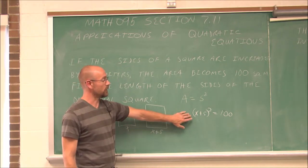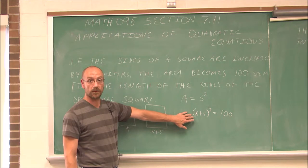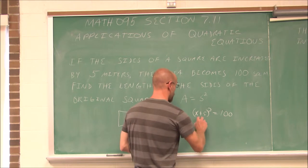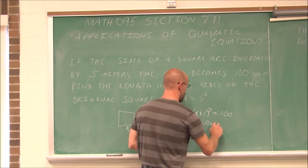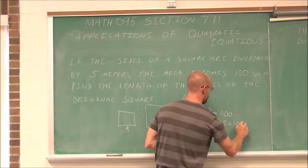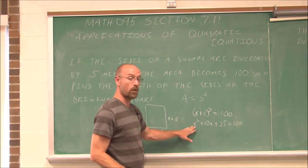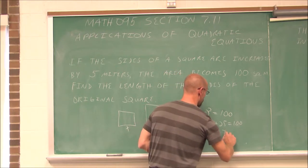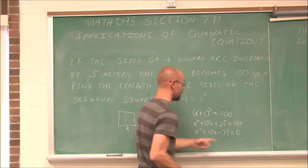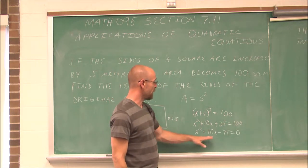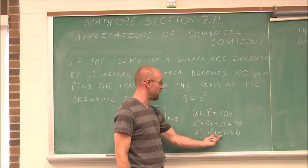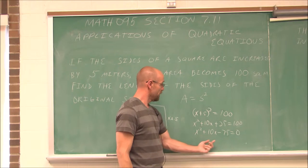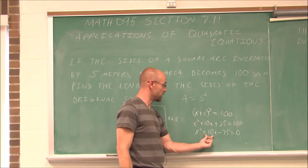Now we have a quadratic we can build and solve. I have to FOIL (x + 5) squared, giving x squared plus 10x plus 25 equals 100. To solve a quadratic, we set it equal to 0: x squared plus 10x minus 75 equals 0, by subtracting 100 from both sides. Since the coefficient is 1, I need factors of negative 75 that sum to 10.